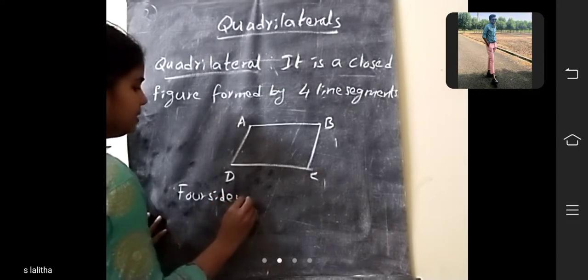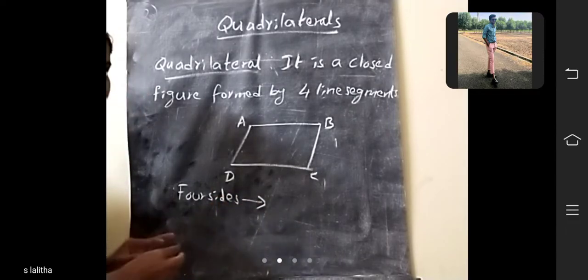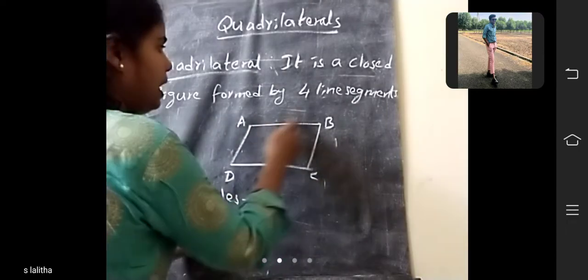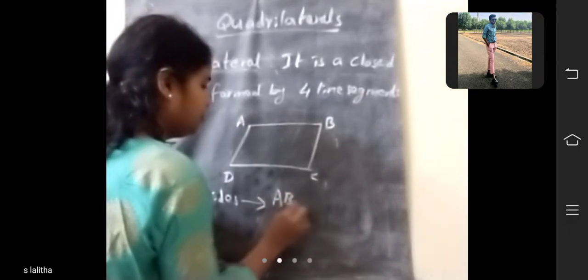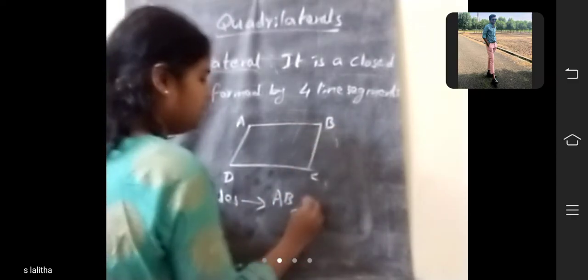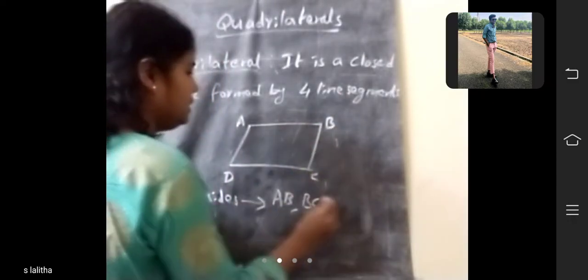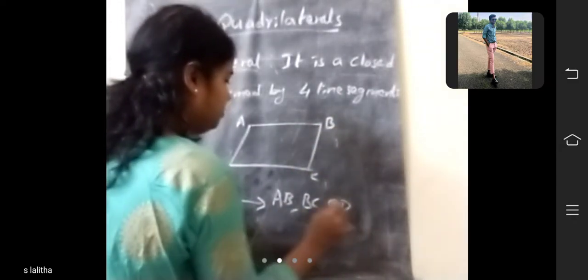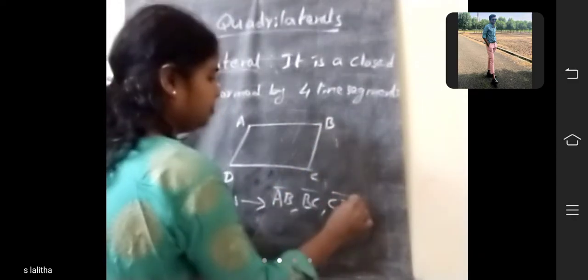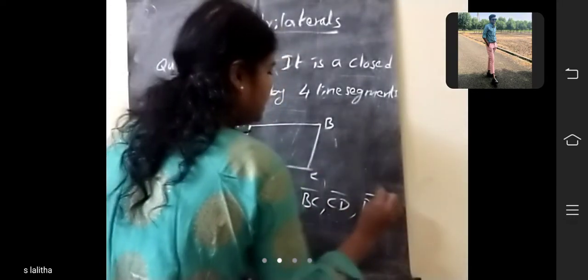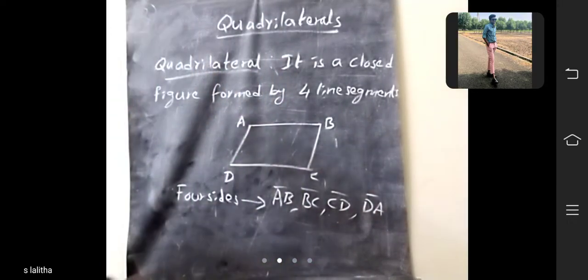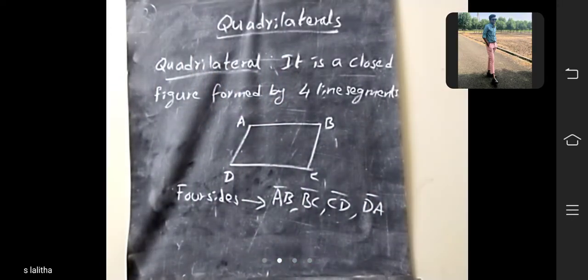4 sides. What are those sides? AB, BC, CD, and DA. These are the 4 sides of a quadrilateral.